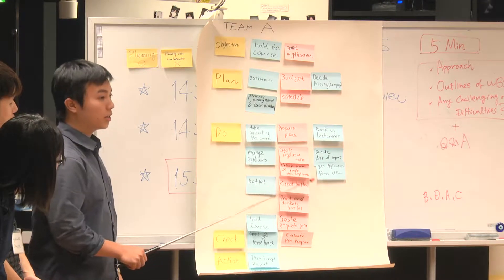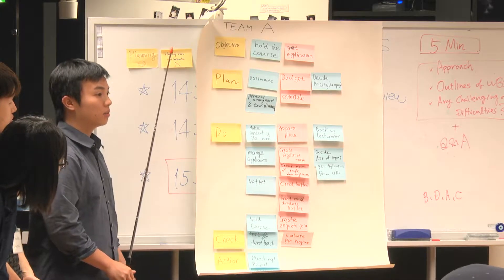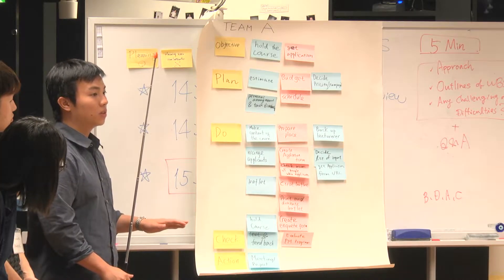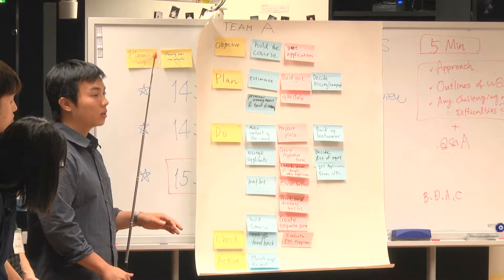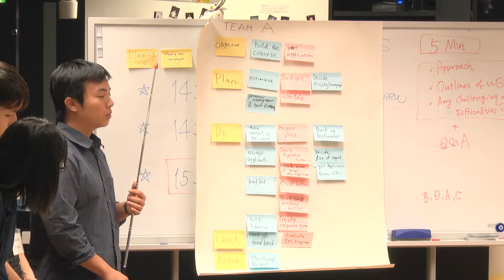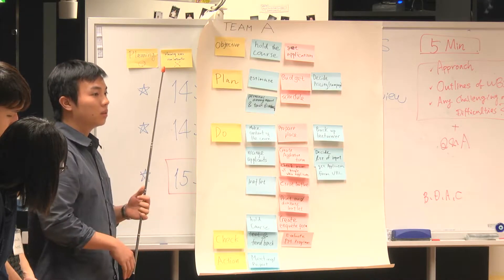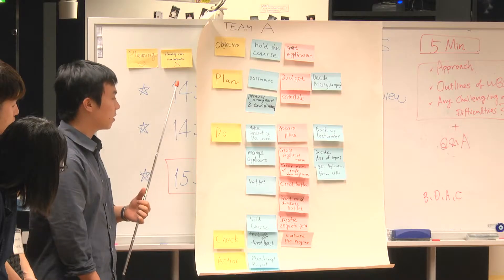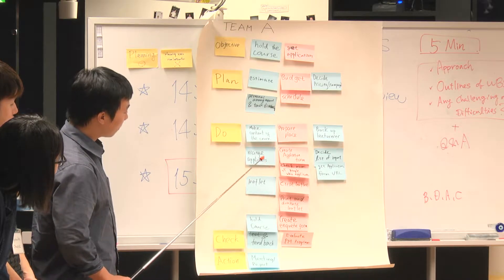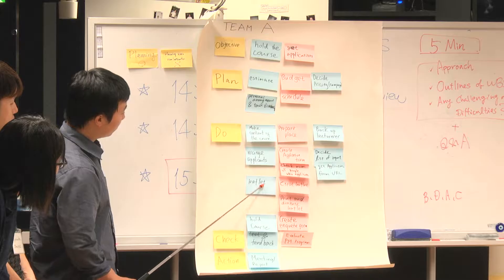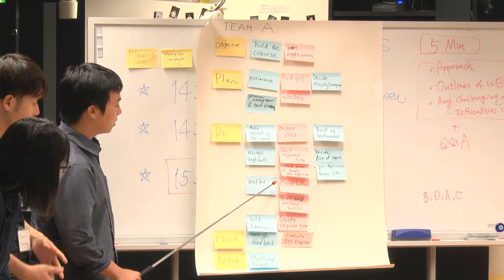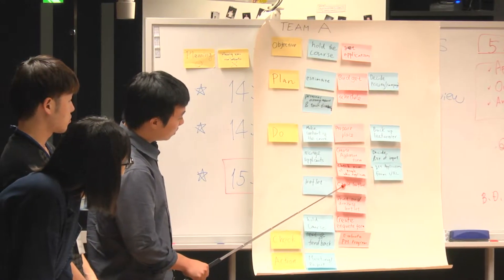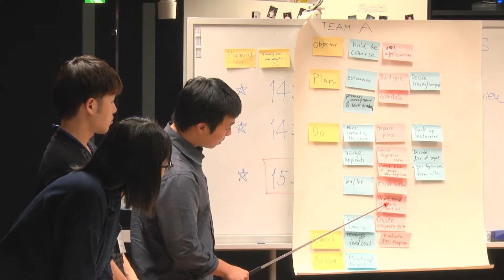And then, we should check the number of applicants. For example, if it exceeds the limitations, then we will stop, or receive register questions, or on the day of the course, we can check who comes, who registered but didn't come, something like that. So next, we make some leaflet. The leaflet is made based on the contents of the course.